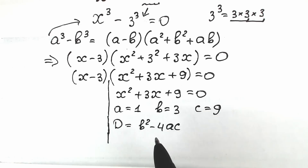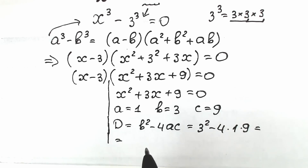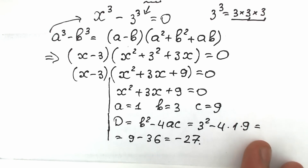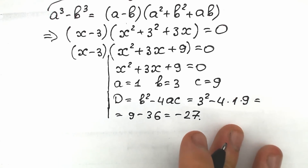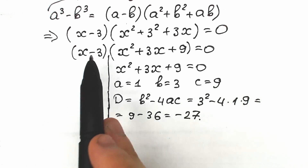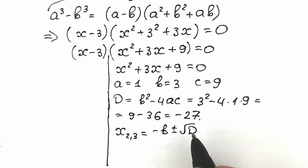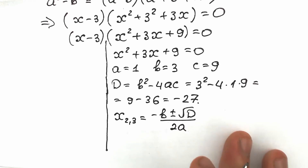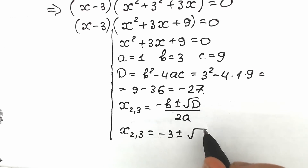Let's find the discriminant using the formula: discriminant equals b squared minus 4ac. Plugging in the values: 3 squared minus 4 times 1 times 9 equals 9 minus 36, which equals minus 27. This is a negative discriminant, which means we have complex roots. But we need to find all roots and show the complete solution.